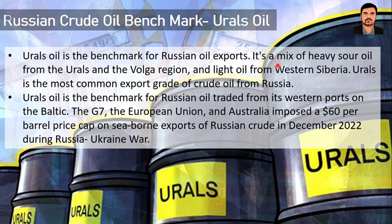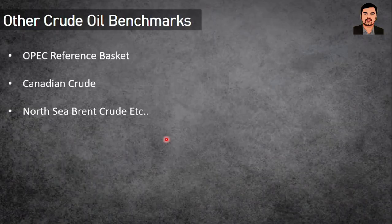Russia's crude oil benchmark is Urals. Recently India has significantly increased imports of Russian oil, replacing US imports, because Russia offers discounts as high as 30%. Urals is a mix of heavy sour oil from the Urals and Volga region and light oil from western Siberia, and it is the most common export grade from Russia. The G7, EU, and Australia imposed a $60 per barrel price cap as part of sanctions on Russian crude oil exports in December 2022 during the Russia-Ukraine war.